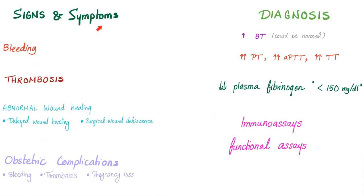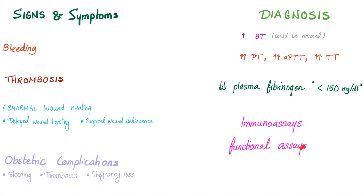Signs and symptoms of fibrinogen disorders: bleeding, thrombosis, abnormal wound healing, and obstetric complications. Diagnosis: bleeding time could be prolonged or normal; prolonged PT, PTT, and TT; plasma fibrinogen is low. Immunoassays and functional assays can help diagnose whether the problem is with fibrinogen quantity or fibrinogen function.